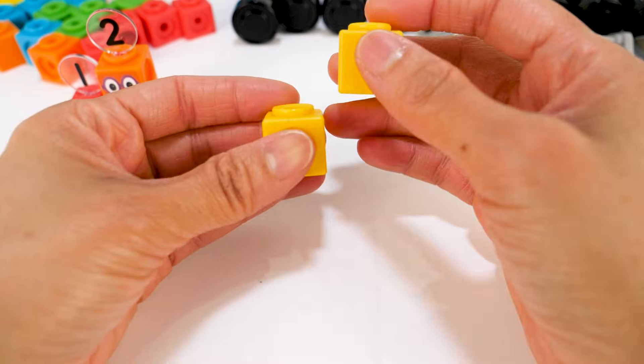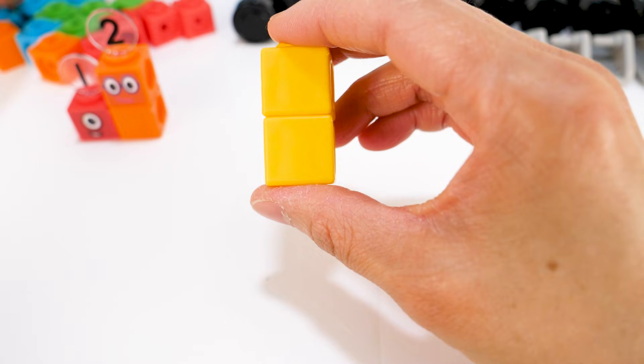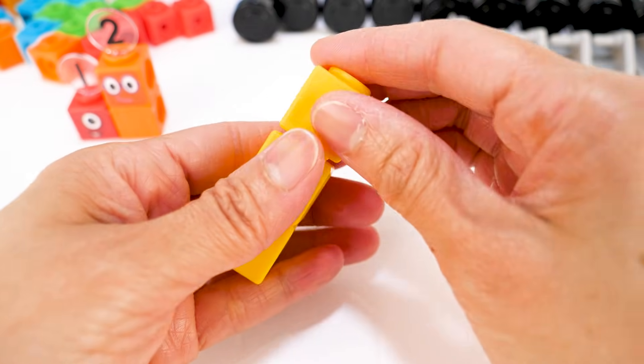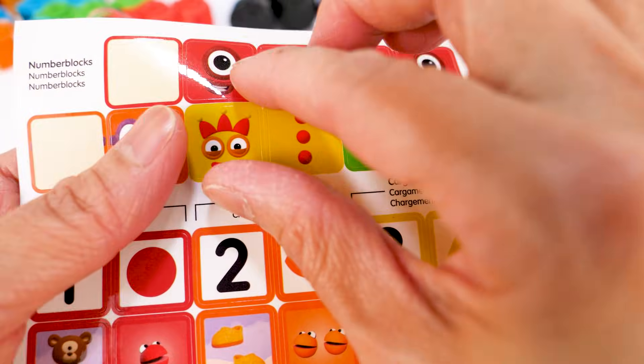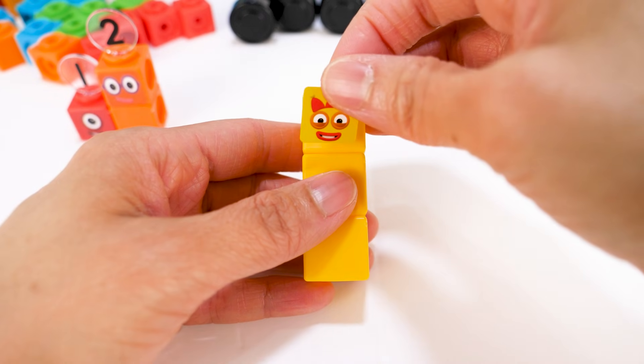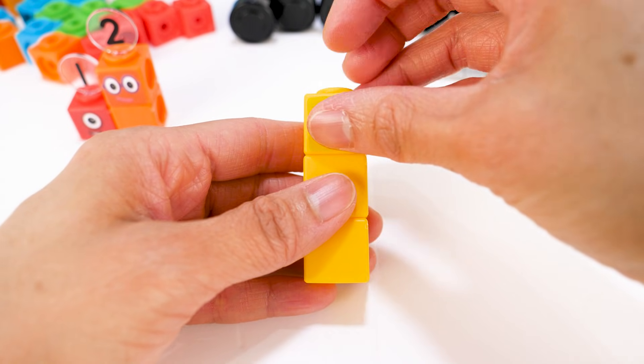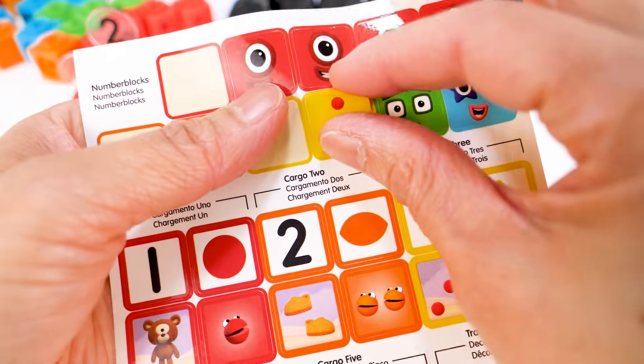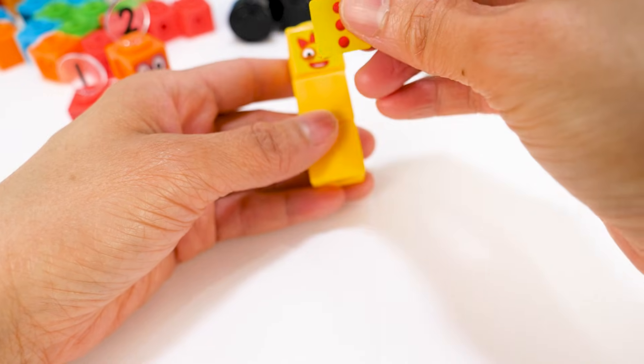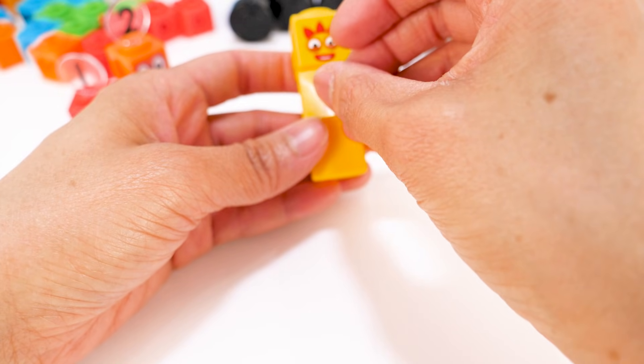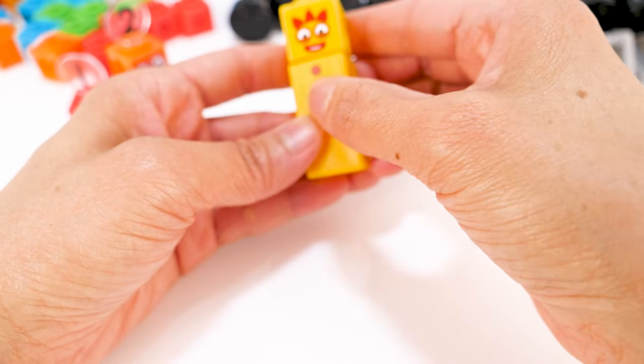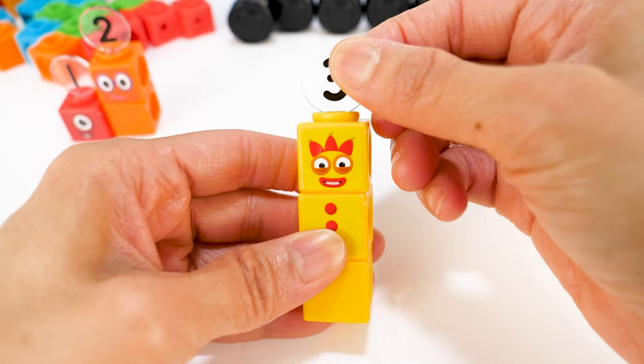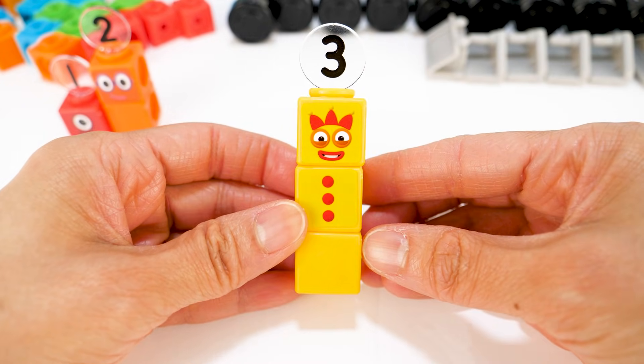Time to build number block 3. A face sticker. Then a sticker with 3 red juggling bars for her body. Don't forget her numbering 3. This is number block 3.